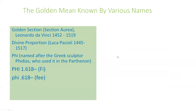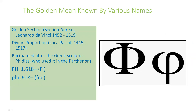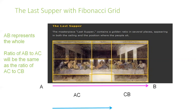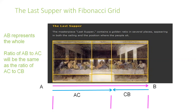Leonardo da Vinci lived at the same time as Luca Pacioli, who wrote 'The Divine Proportion' and described these numbers and proportions — and Pacioli taught Leonardo da Vinci about them. Let's look at an example in da Vinci's famous painting, the Last Supper — the most famous religious painting in the world. You can clearly see those proportions present: AB represents the whole, and the ratio of AB to AC is the same as the ratio of AC to CB.